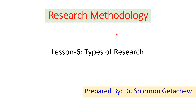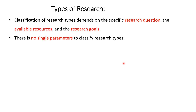Hello everybody and welcome back to research methodology lesson 6: types of research. Research can be classified into many types, but before moving to the types of research we have to know about the criteria or parameters to divide the research. Classification of research types depends on the specific research question, the availability of resources or data, and the goal of the research. In general, there is no single parameter to classify research types.